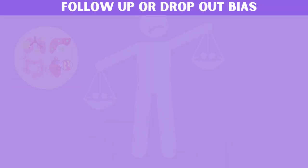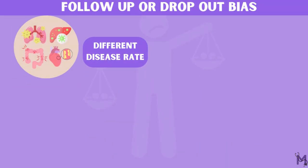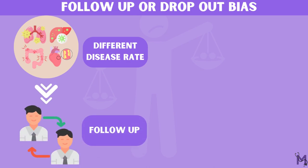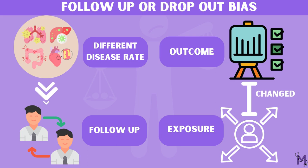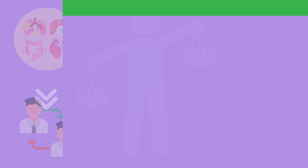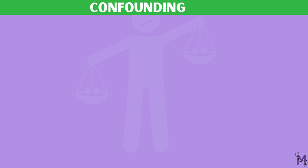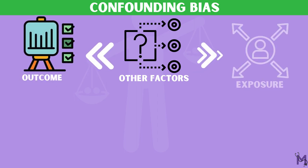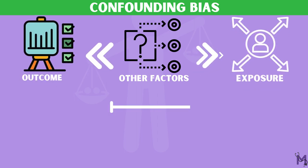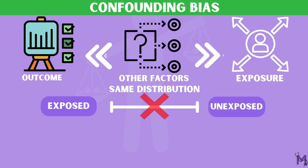Third, if the rate of disease is different among those lost to follow-up, then the relationship between exposure and outcome may be changed. This is called the follow-up or drop-out bias. Confounding bias, as discussed in case-control, will occur when other factors associated with outcome and exposure variables do not have the same distribution in the exposed and unexposed groups.